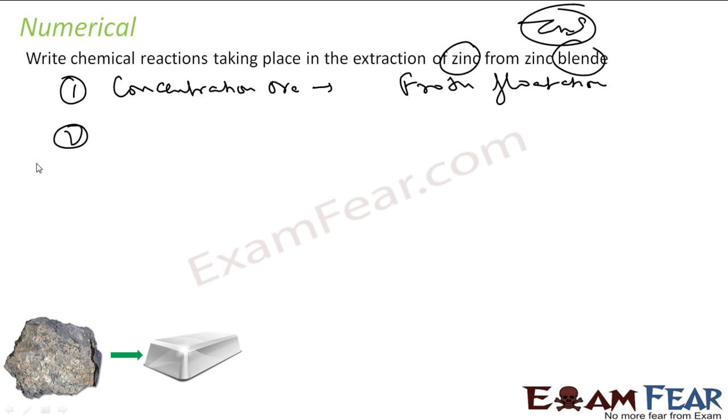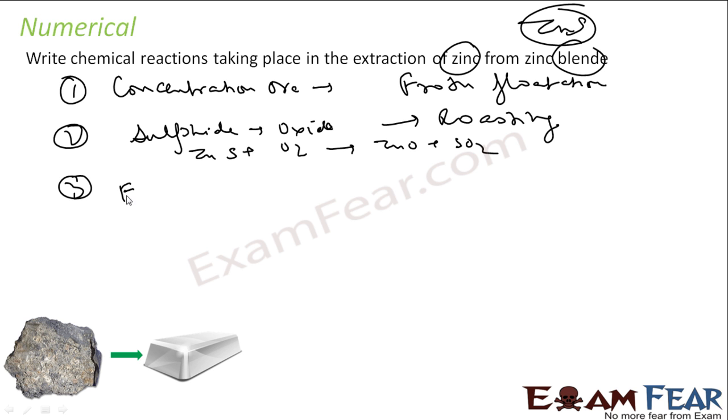Once that is done, we have concentrated ore. That sulfide we will convert into oxide using roasting to get ZnO. This reaction I can write as: zinc sulfide plus oxygen will give you ZnO plus SO2. Once we have oxide, we will extract zinc from oxide.